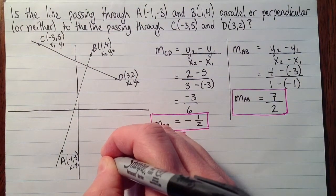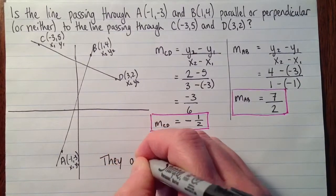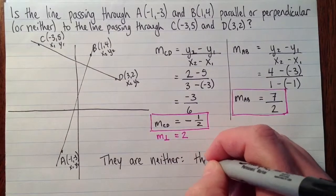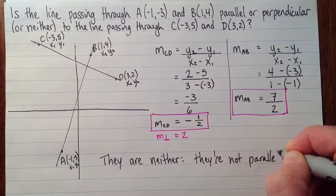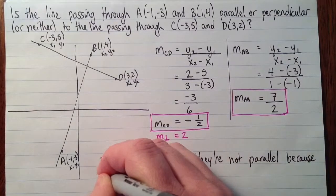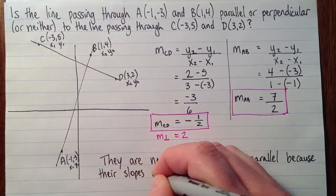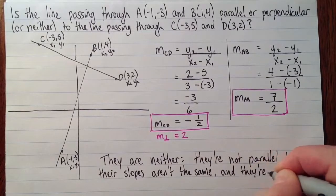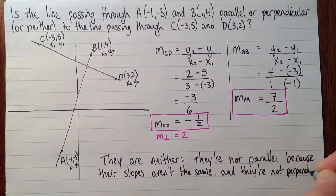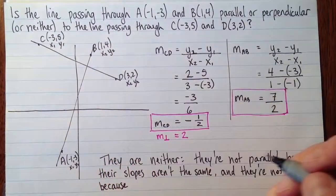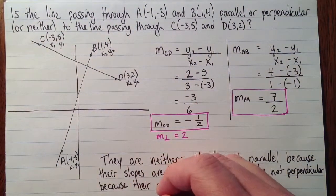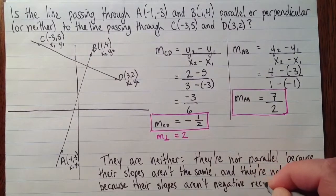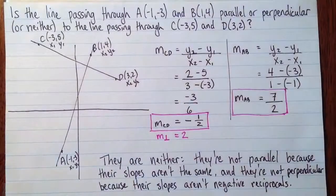So the slopes, let's put, they are neither. And then an explanation. We always need an explanation. They're not parallel, because the slopes aren't the same. And they're not perpendicular. Because their slopes aren't negative reciprocals.